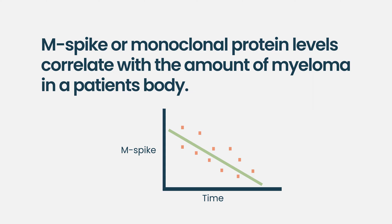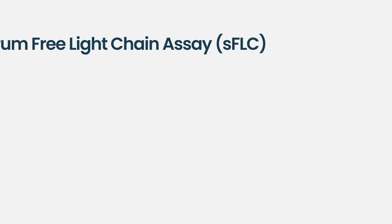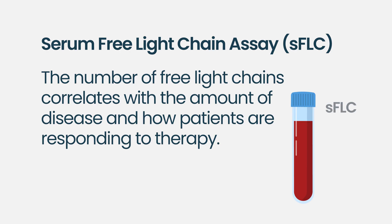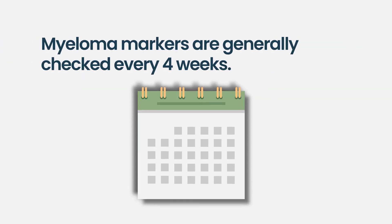One of the other markers we use is called the serum free light chain assay — that is a fragment of the protein that the myeloma produces, which we can also follow across time. The amount of free light chains detected in the patient's blood correlates with the amount of disease and how they're responding. These are two powerful tools we check pretty much every cycle of therapy, usually about every four weeks.